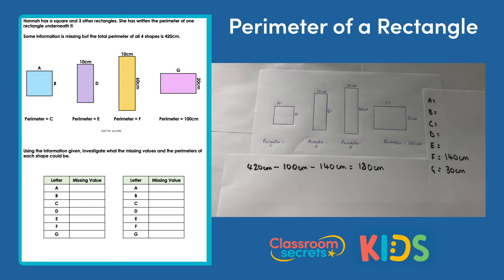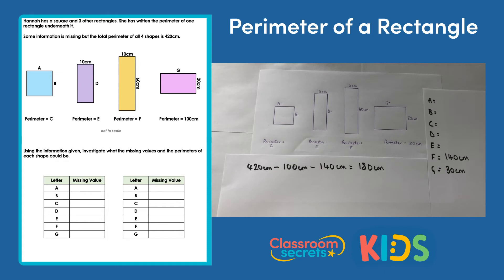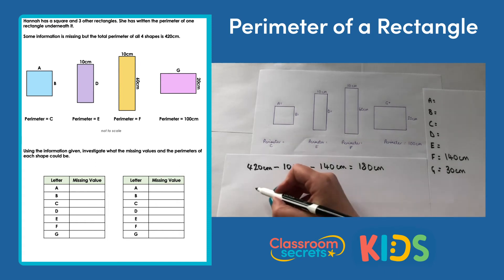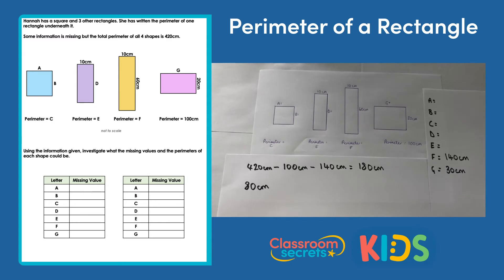So that means we can start to have a look at the missing values. This is where you might have different options for the answers that you have, and I'm just going to model one way to do it — but if you've found another way, that's absolutely fine. I'm going to have a look at this shape first. I think the perimeter of that shape could be 80cm. I know that that shape is a square — it said so in the instruction: Hannah has a square and three other rectangles.